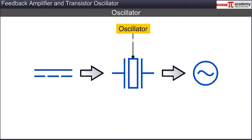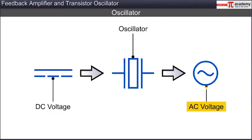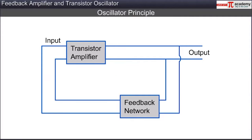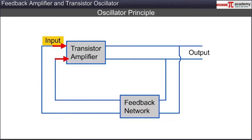An oscillator is an electronic device that converts DC voltage into AC voltage. An oscillator consists of a transistor amplifier and a feedback network that extracts a part of the output of the amplifier and feeds it back as input to the transistor amplifier.